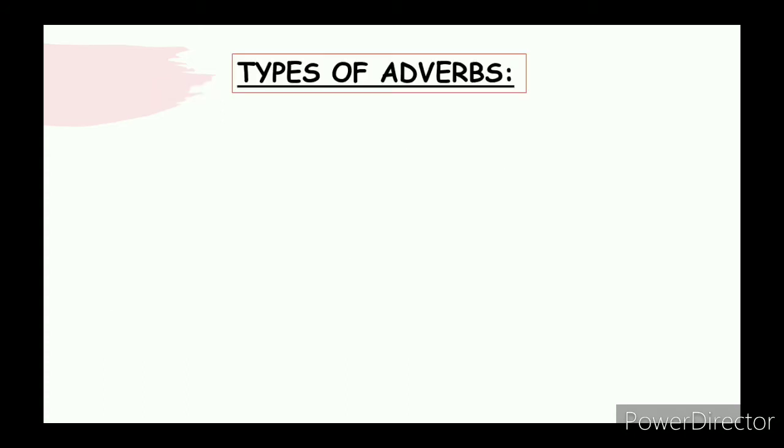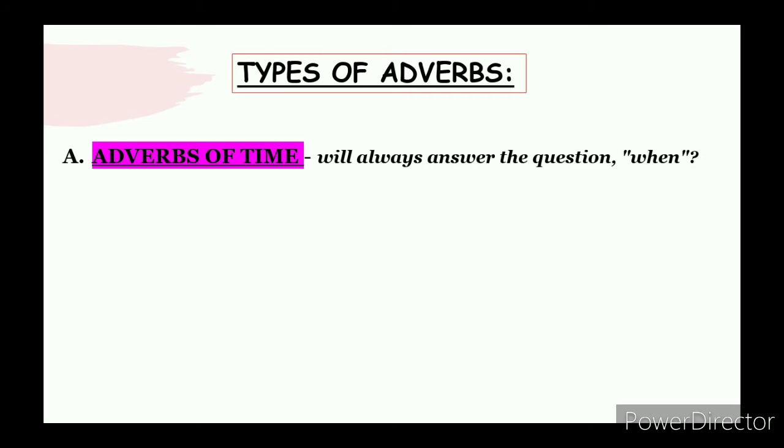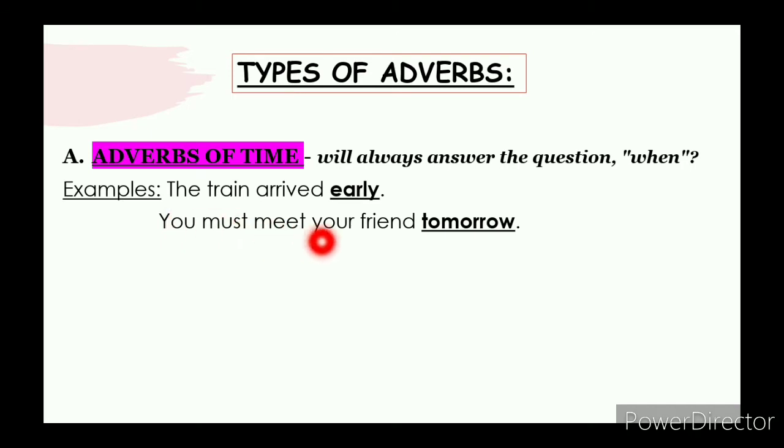Now we'll be discussing types of adverbs. Just like we have discussed types in every part of speech, we will discuss types of adverbs. First is adverbs of time. Will always answer the question when. This is very understandable. Example, the train arrived early. So early is an adverb. You must meet your friend tomorrow. Tomorrow is an adverb.